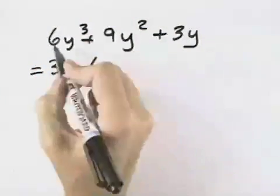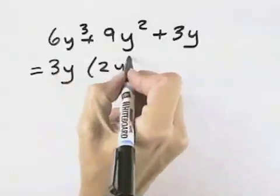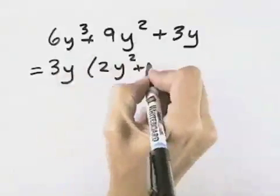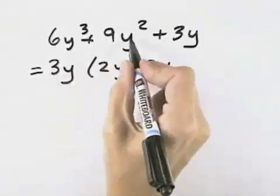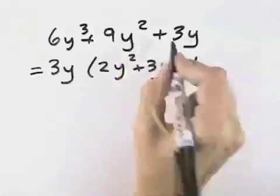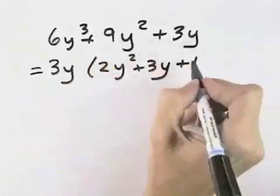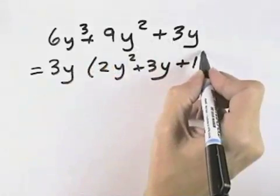When we divide each term by 3y, we see we're left with 2y squared in the first term, plus 3y when we divide the 9 by 3 and the y squared by y, and finally just a 1 because 3y divided by 3y is dividing by itself, so that leaves us with 1.